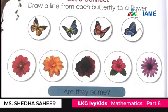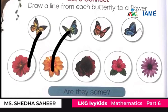Let's connect a line from each butterfly to a flower. One, two, three, four. Are they the same? No. One flower is extra.